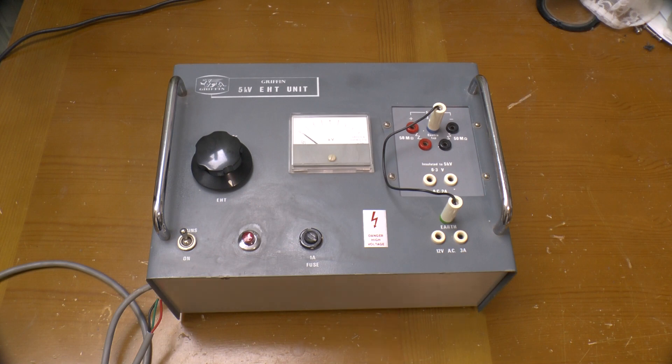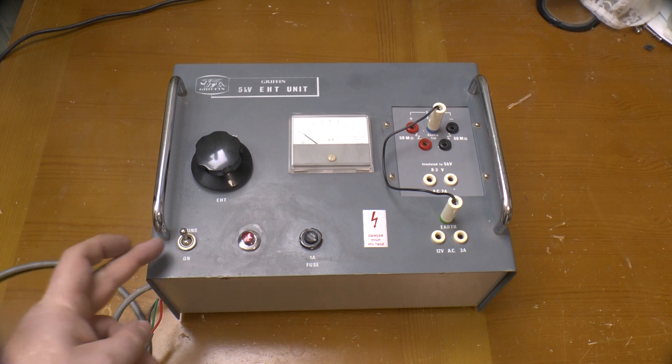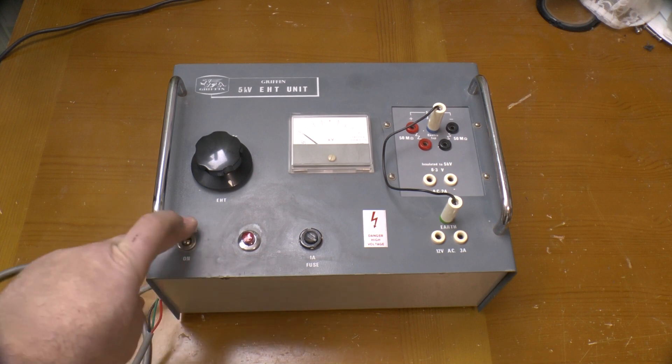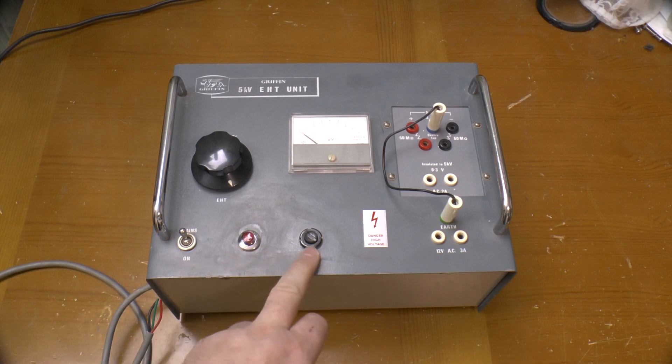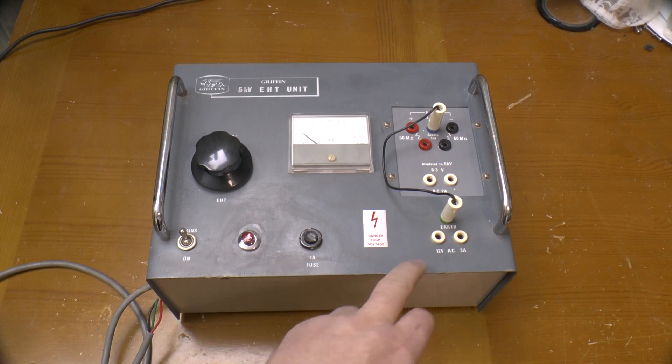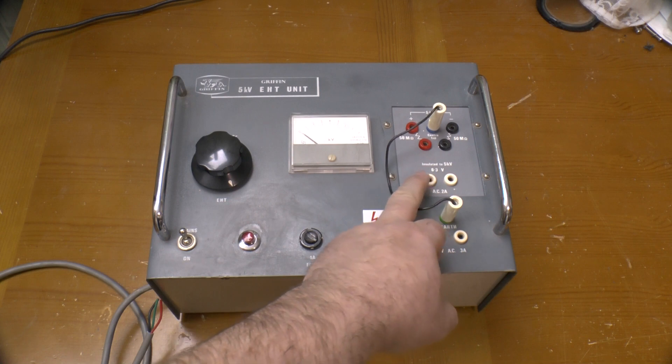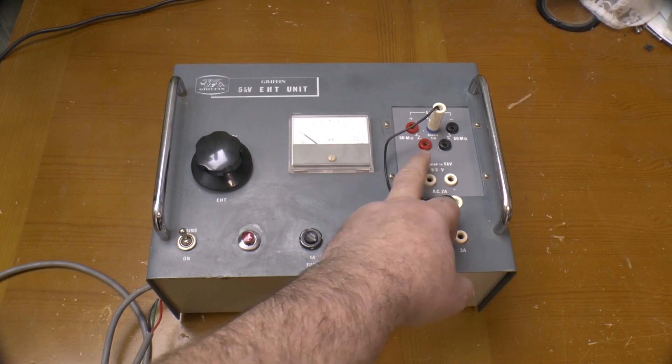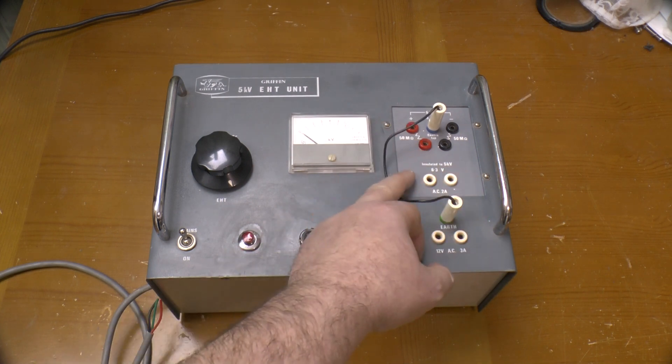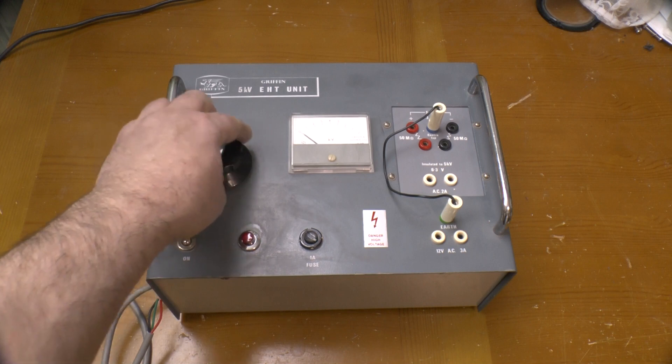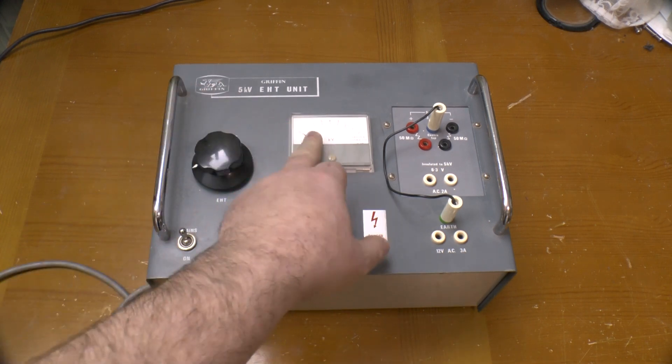It seems in pretty good condition on the outside, at least, apart from the switch being broken. I need to take a look at that. Next to the switch there's a neon power indicator and a fuse holder with a one amp fuse. Elsewhere on the front there are terminals for a center tap supply of up to 5000 volts with or without an additional 50 megaohms of resistance on each side. There's a control knob to adjust the voltage and a meter to show what it's up to.